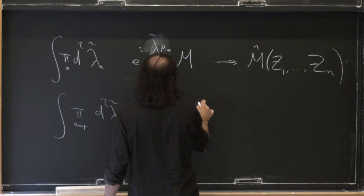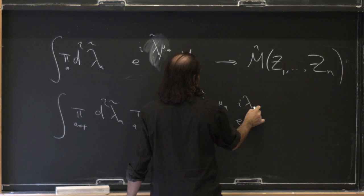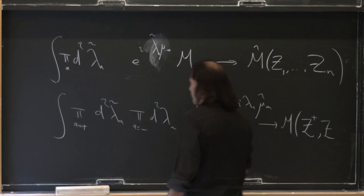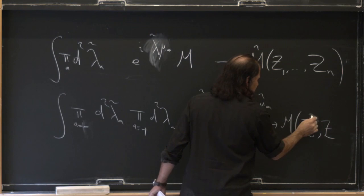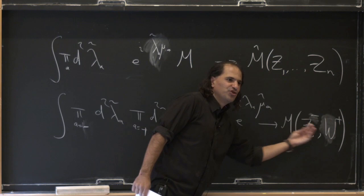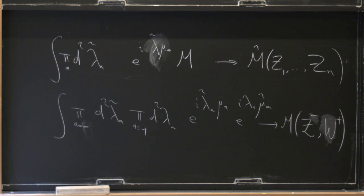We can go to twistor space in various ways. For example, the simplest thing is to Fourier transform all the lambda-tildes to go to m-hat using z variables for everybody. Something else that's rather natural-seeming is to Fourier transform with respect to d²lambda-tilde for the positive helicity variables and d²lambda for the negative helicity particles. For some of them I'd do e^{i lambda-tilde_a mu_a}, and for the others e^{i lambda_a mu-tilde_a}. This will give me z's for the negative helicity guys and w's for the positive helicity guys. Why is this natural? Because if I do that, the amplitudes have no weight at all — they're invariant under rescaling z and w.